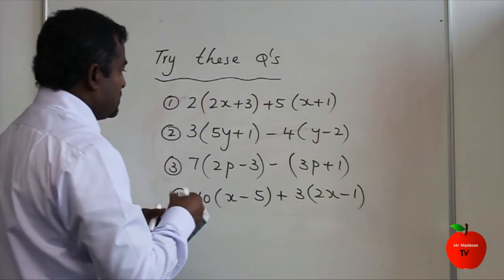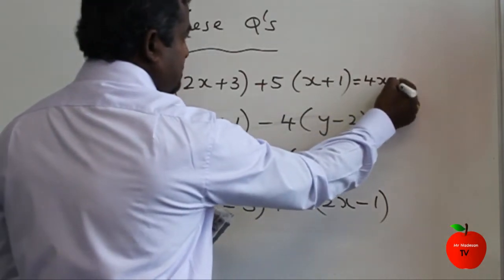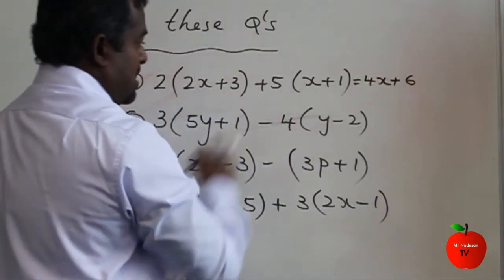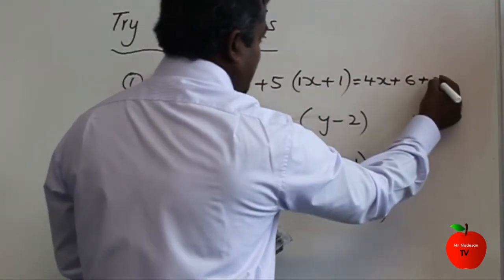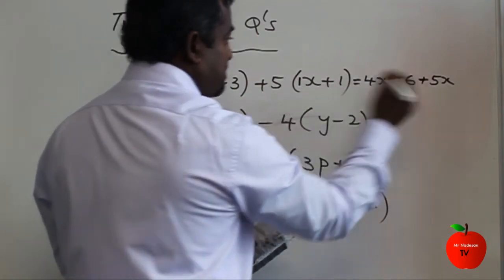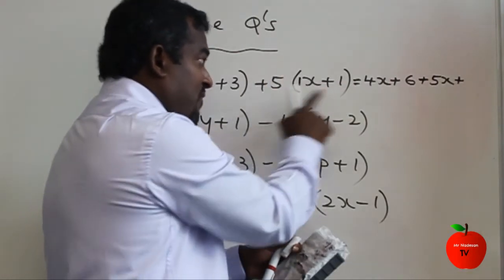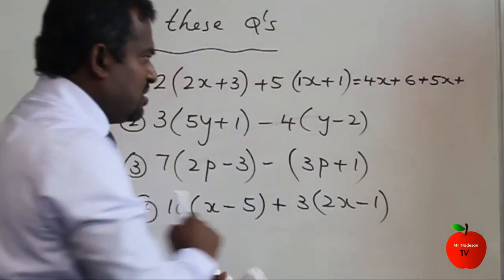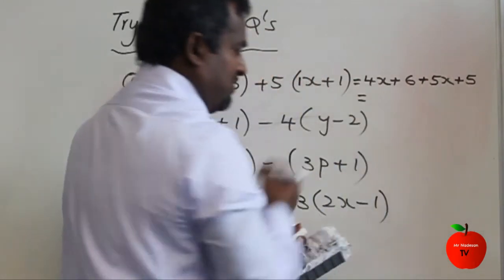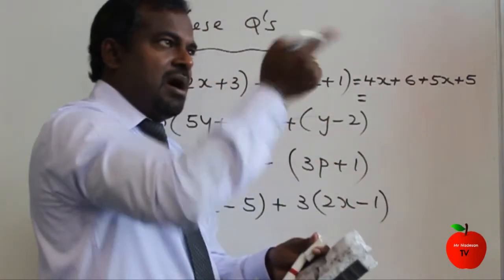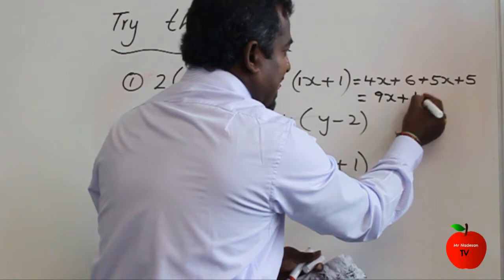The first question: 2 times 2x comes to 4x, and plus 2 times 3 comes to 6. Plus 5 times x — there's a 1 there, so that comes to plus 5x. Then plus times plus is plus: 5 times 1 is 5. Make sure you times it, not add it — some people think 5 plus 1 and put 6. Expand means multiplication, so 5 times 1 is 5. Now simplify: 4x plus 5x — up and up — gives 9x. Plus 6, going up 6 steps. Plus 5, again 5 up. So plus 11. That's it.